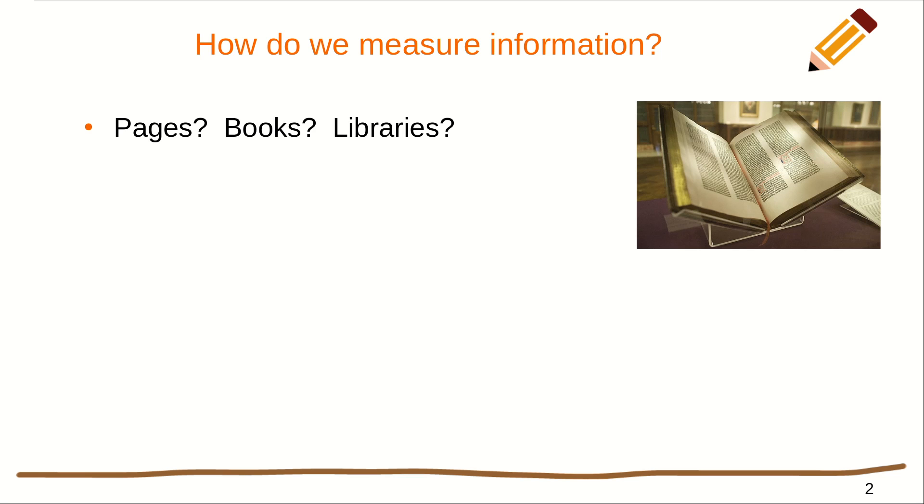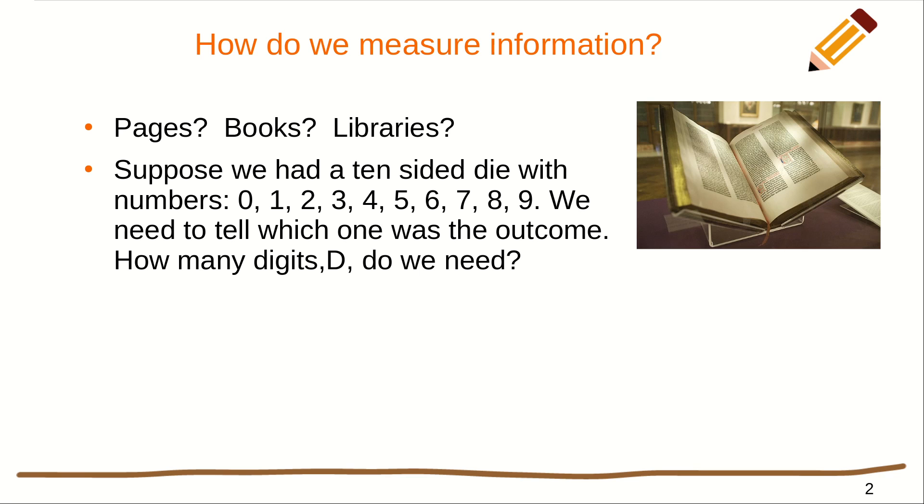Maybe books, pages, libraries? Suppose we had a 10-sided die with the numbers 0 through 9. We need to tell which one was the outcome from rolling it. How many digits do we need to tell which one?